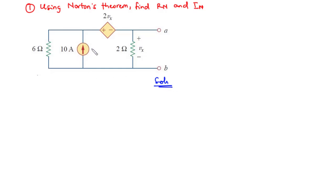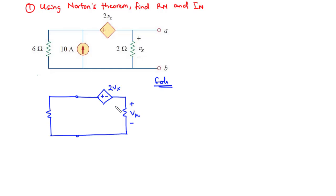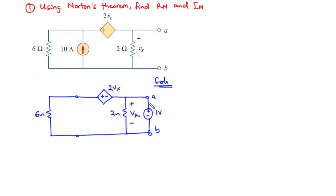Whenever you deactivate a current source, you represent that with an open circuit. So let's redraw the circuit. Always notice that independent sources are deactivated; however, dependent sources are left alone. Then we introduce a 1V source between the two terminals. What is left is to find the value of I0, and then we can use that to find the value of Rn — that is the Norton's resistance.